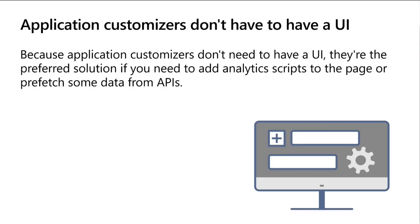Application customizers don't have to have a UI. They might be something like embedding Google Analytics or similar analytics tooling to track user views — a quite typical scenario. There's also a free Microsoft equivalent called Microsoft Clarity. Application customizers can also claim UI positions — placeholders — which are exposed inside of Microsoft Teams as a Viva Connection. Right now we still have one placeholder at the top and one at the bottom — a header section and a footer section where you can embed extensibility.